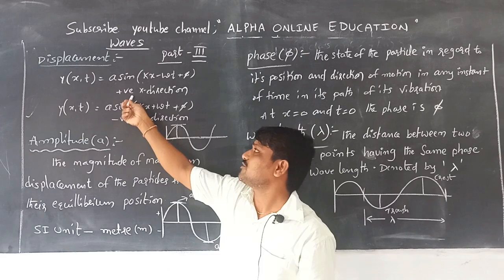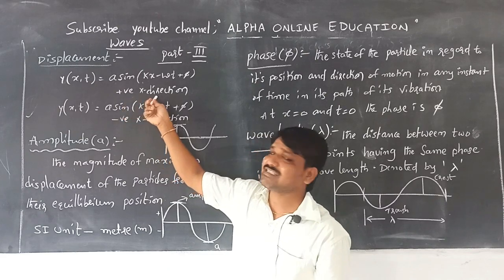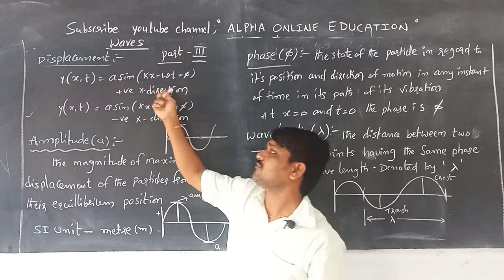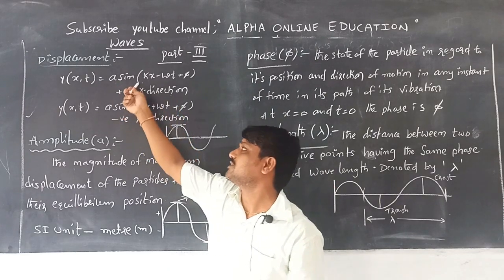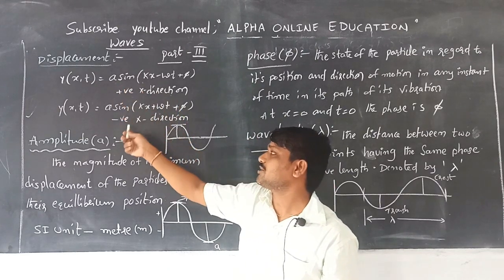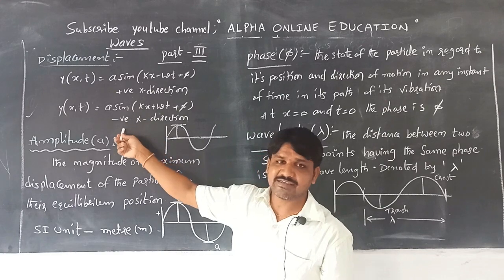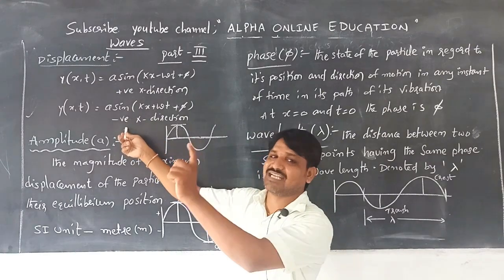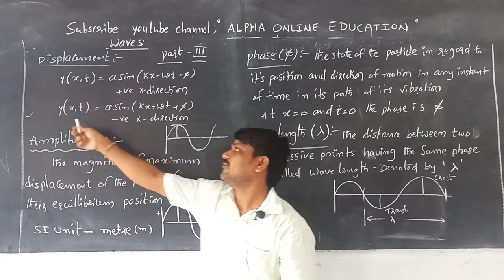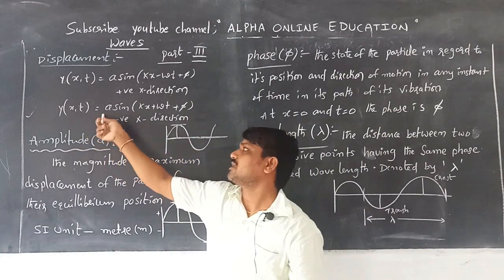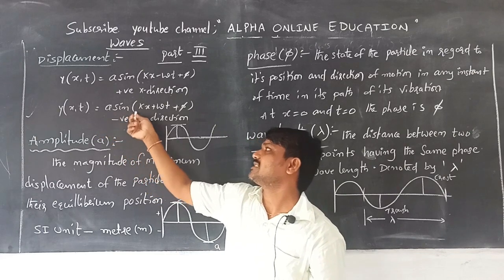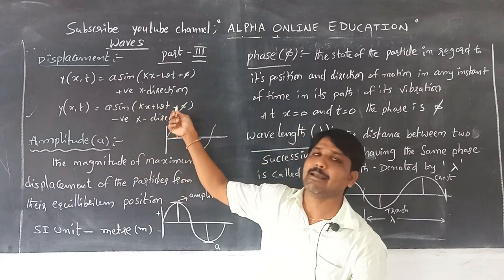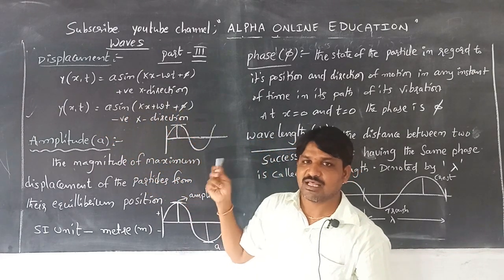Whenever the wave is travelling along the positive x direction, we get this equation. If the wave is travelling along the negative x direction, then the equation is: y(x, t) = a sin(kx + ωt + φ).